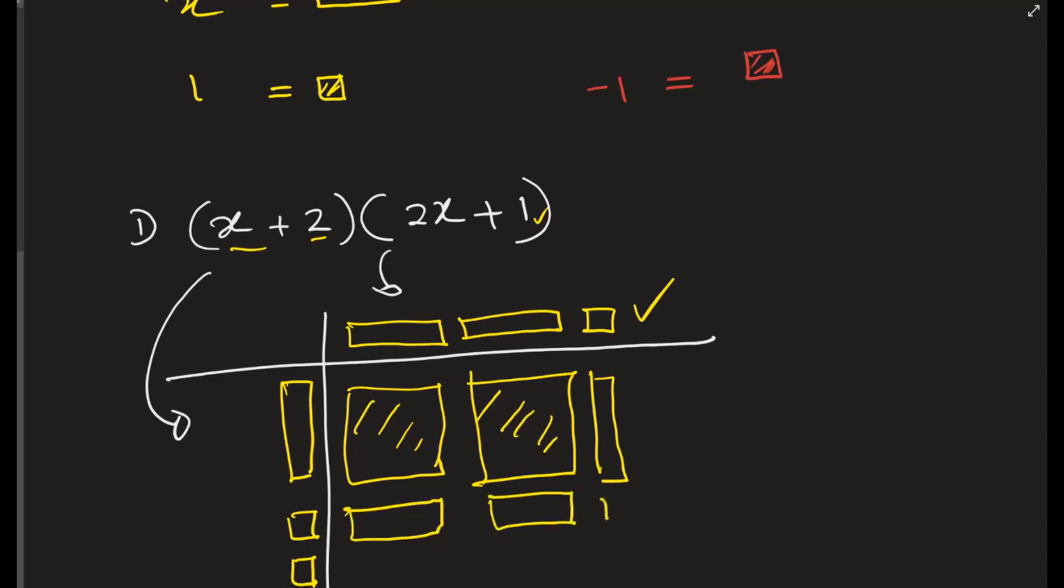Again, 1 times x is x, 1 times x is x, and 1 times 1 is 1. So you see now we completed that one. Two sets of bracketed factors, we multiplied them. And that's how the picture looks.